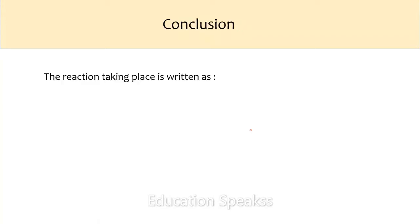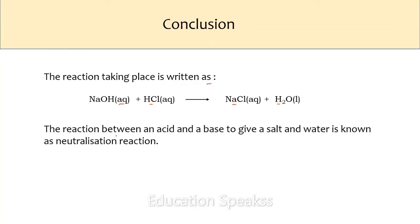The reaction taking place is: sodium hydroxide reacts with hydrochloric acid to give sodium chloride and water. Such a reaction is called a neutralization reaction — that is, the reaction between an acid and a base to give a salt and water. In general, a neutralization reaction can be written as: base + acid → salt + water.